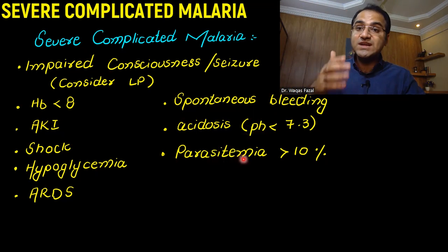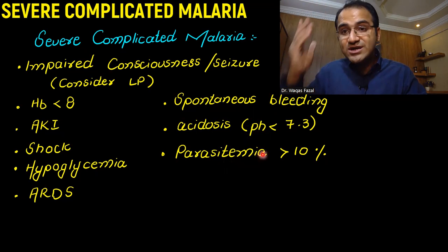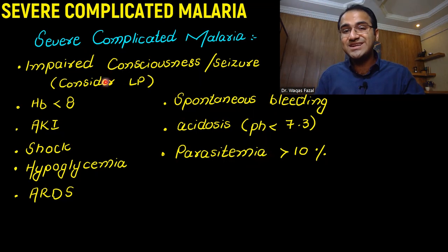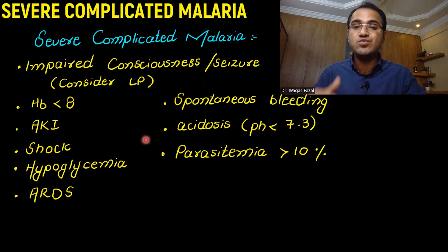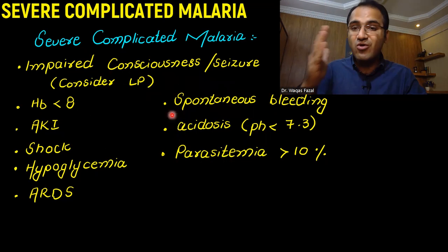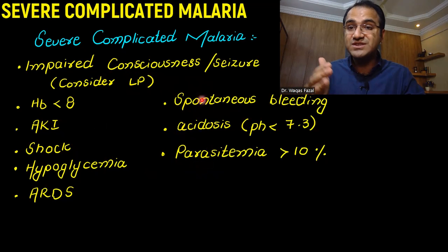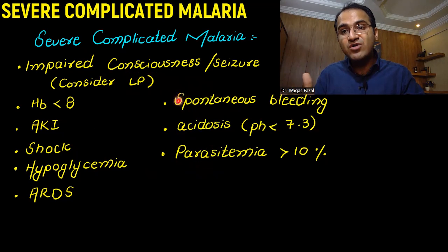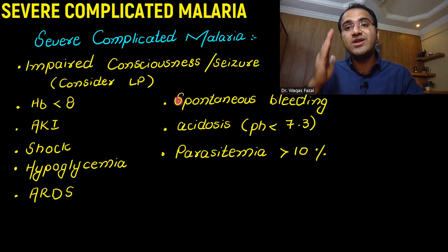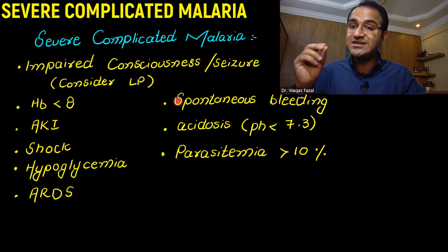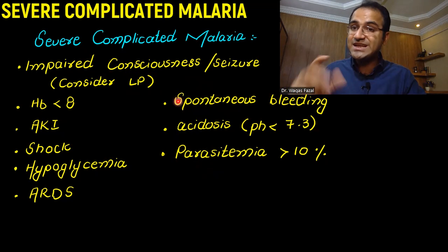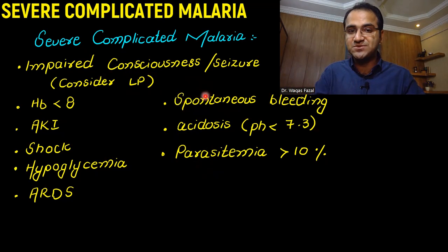Parasitemia on the slides greater than 10% is considered severe complicated malaria. If you find any one of these criteria, it means the patient has developed severe complicated malaria and needs aggressive management.